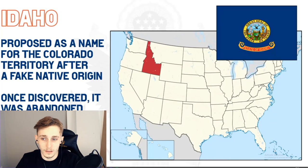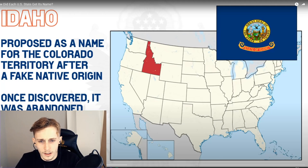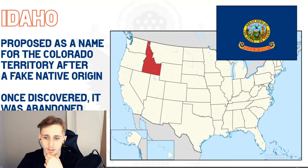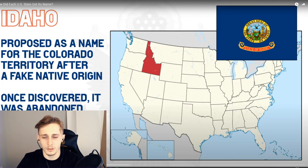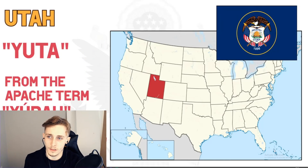Idaho's name was initially proposed for the territory of Colorado after a supposed native term, but when people realized the native term didn't actually exist, they abandoned the idea. However it had already fallen into common usage and was later proposed for what became the actual Idaho territory. An alternative etymology attributes the name to the Apache word 'idahe' meaning 'enemy.' An Apache term was also used by the Spanish to name Utah — from the Apache term 'Yuta,' the Spanish designation for the local people, meaning 'high.'